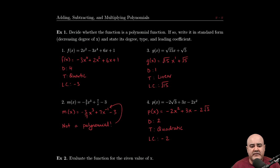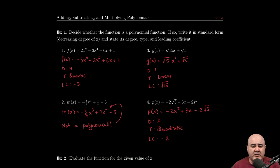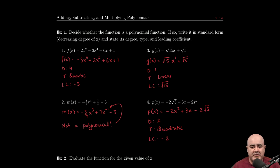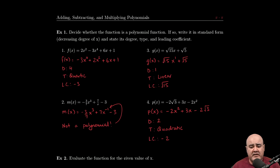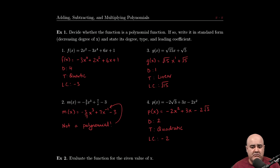So in the first example, we're asked to decide whether the functions that we're given are actually a polynomial function or if they're just some other type of function. And if so, we're asked to write the function that we're given in standard form, which in polynomial land means that the degrees of x must be decreasing.